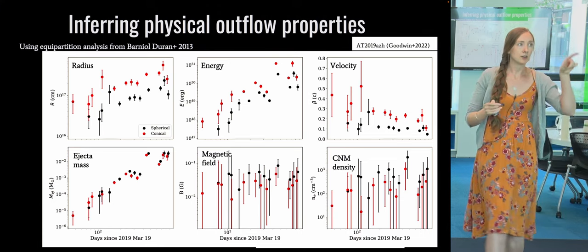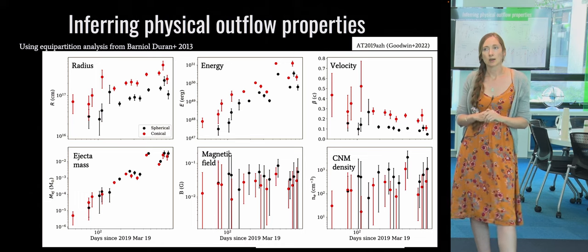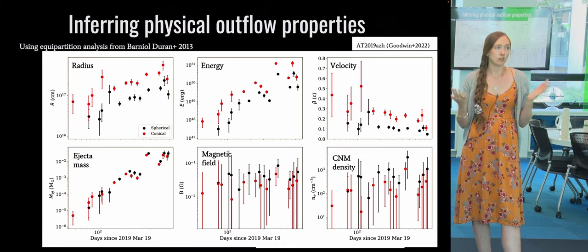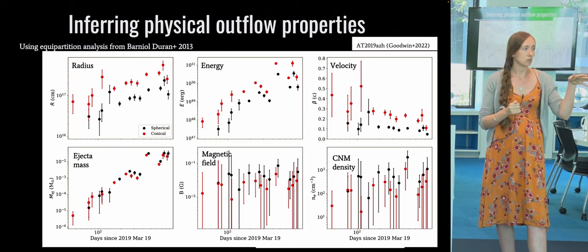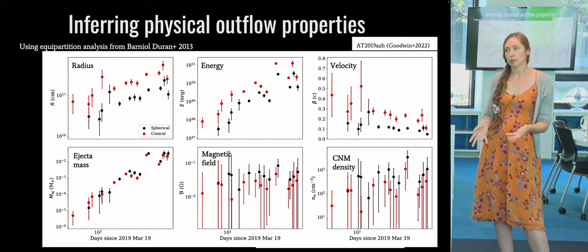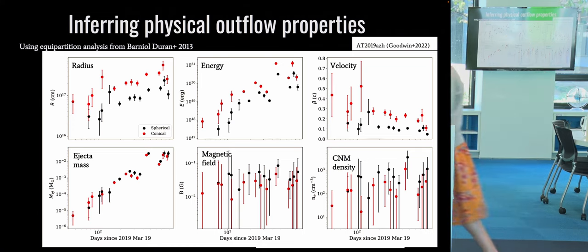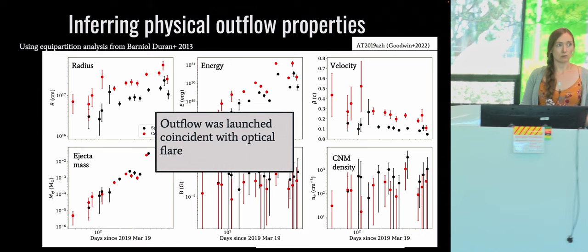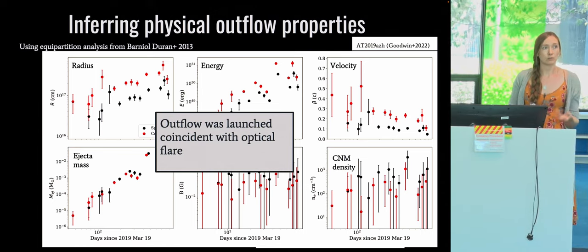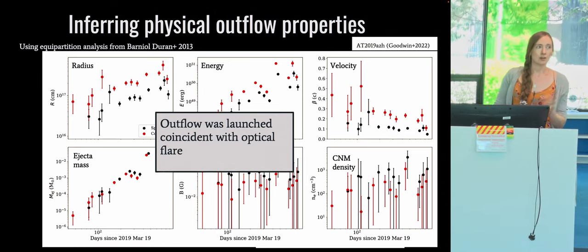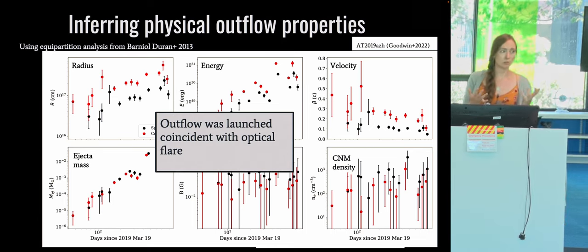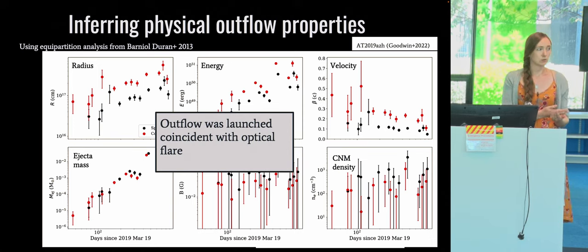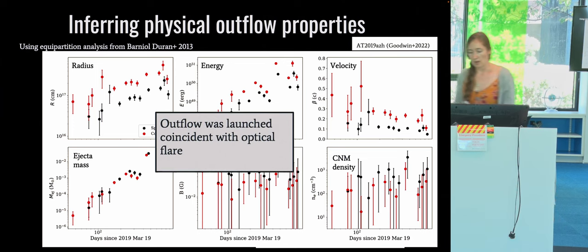When we do this, we can fit a line to the radius and track back in time to when the radius was zero, giving a constraint on when the outflow was launched. For AT2019AZH, we found the outflow was launched coincident with the initial optical flare — very early on. It's difficult to see how you could drive an accretion-induced wind for an outflow that was launched coincident with the initial optical rise of the event.